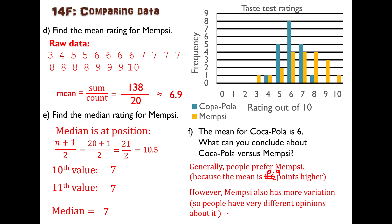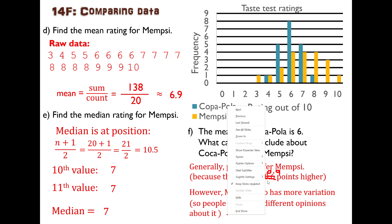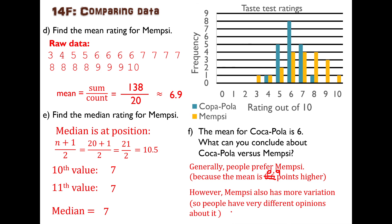That said, that's not the whole story. Mempsi also has more variation, so people have very different opinions about it — you can tell this because the range is higher. You could also say the IQR is higher and therefore it has more variation and is less consistent. I hope this has been helpful to show you how to use statistics to compare things. See you next time!